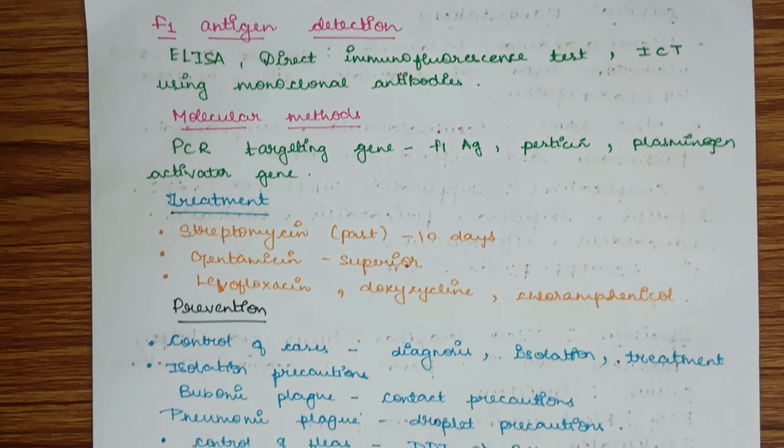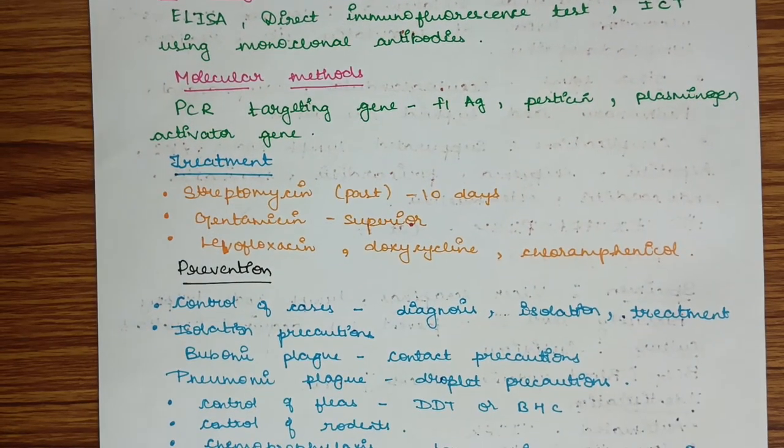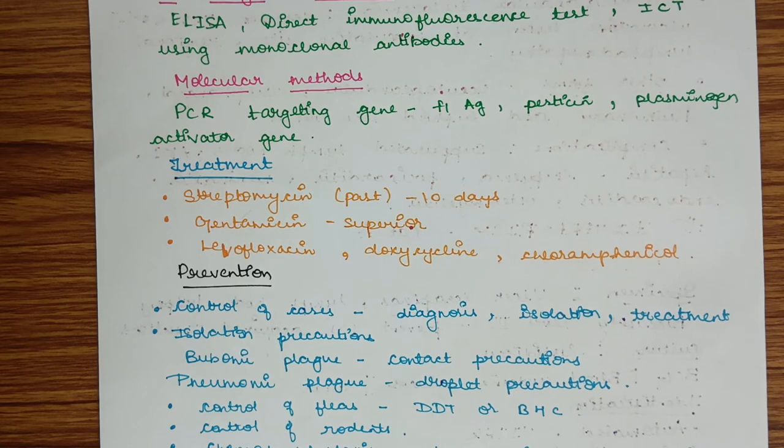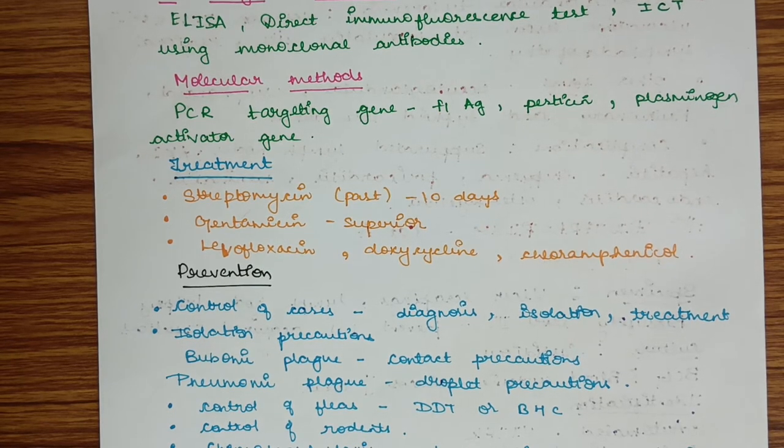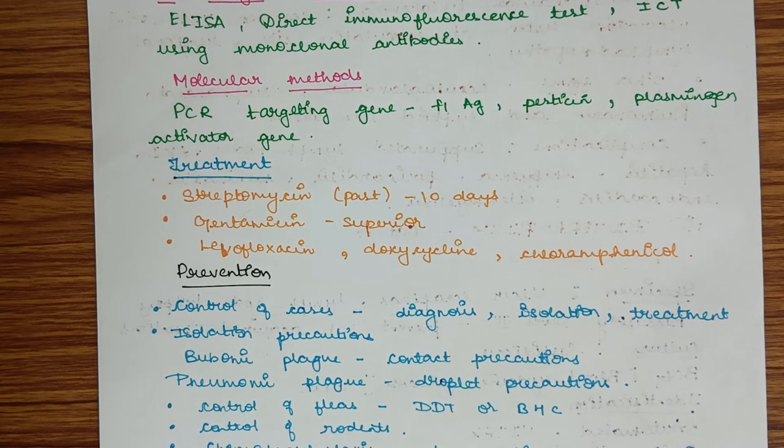Treatment of plague: streptomycin was used in the past. Now the preferred drug of choice is gentamicin because it is superior to streptomycin. Also, levofloxacin, doxycycline, and chloramphenicol may be used.